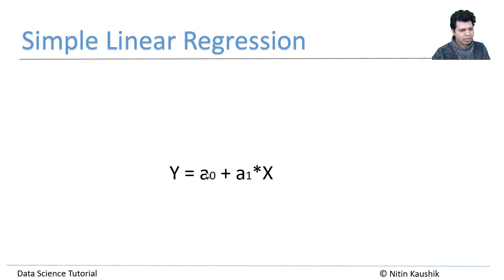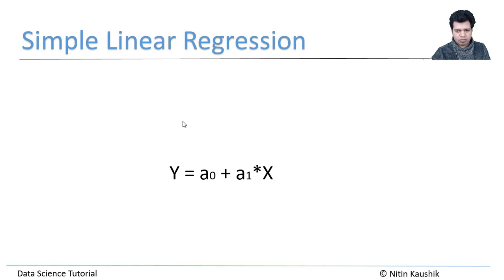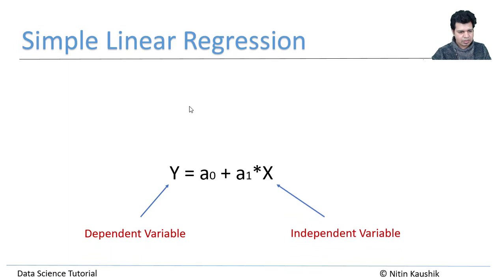Here y is a dependent variable — something we try to explain. For example, what grades does a student get based on the amount of time he puts into studies? X is the independent variable. So in this context, y is grades and X is the amount of time put into studies.